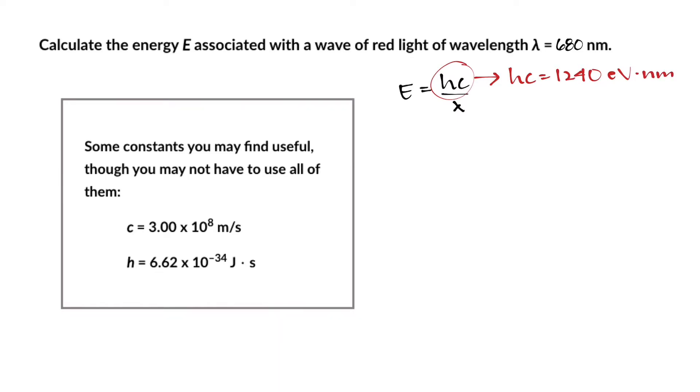The way you calculate that is by multiplying h by c and then converting from joules to electron volts and meters to nanometers, but that's done in a previous example. If you haven't had a chance to watch that video, go ahead and do that before you come back and continue this one.